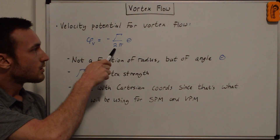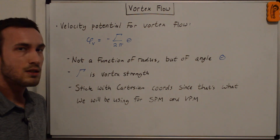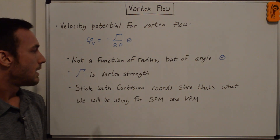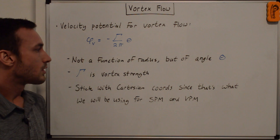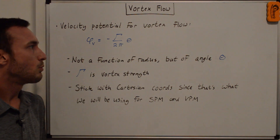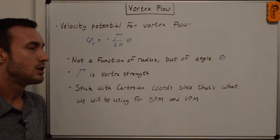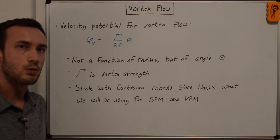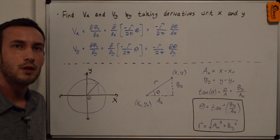Note that this is not a function of the radius, but it is a function of the angle theta. Gamma is the vortex strength, and we'll be solving this for Cartesian coordinates since that's what I'll be using for my source and vortex panel method videos.